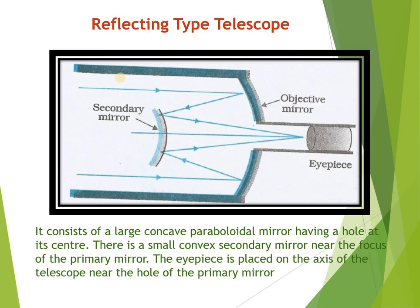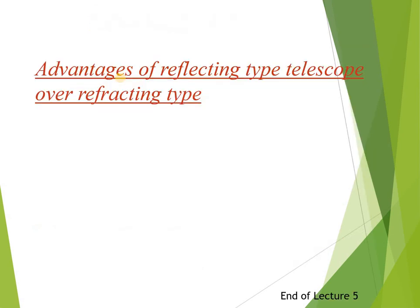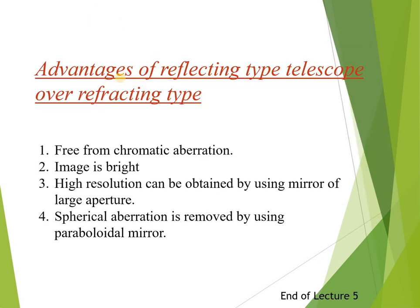Now let us understand the advantages of a reflecting type telescope over a refracting type telescope. The first advantage is that it is free from chromatic aberration. Chromatic aberration means that when a lens is used, light rays from a distant source form a colored image — this inability of a lens is called chromatic aberration. Since a mirror is used here, the image is free from this defect.